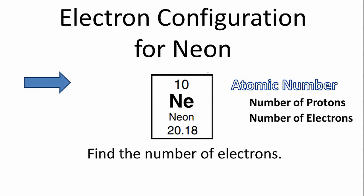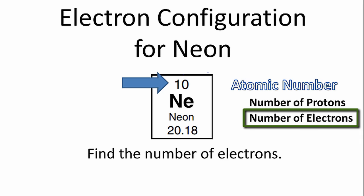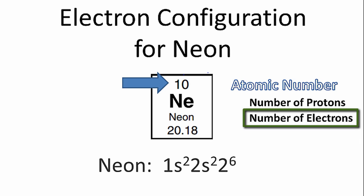To find the electron configuration for neon, we first look at the periodic table to determine the atomic number, which is the number above the element symbol. The atomic number equals the number of protons for the atom, but it's also equal to the number of electrons. Once we have the number of electrons, we can use that to write the electron configuration for neon.